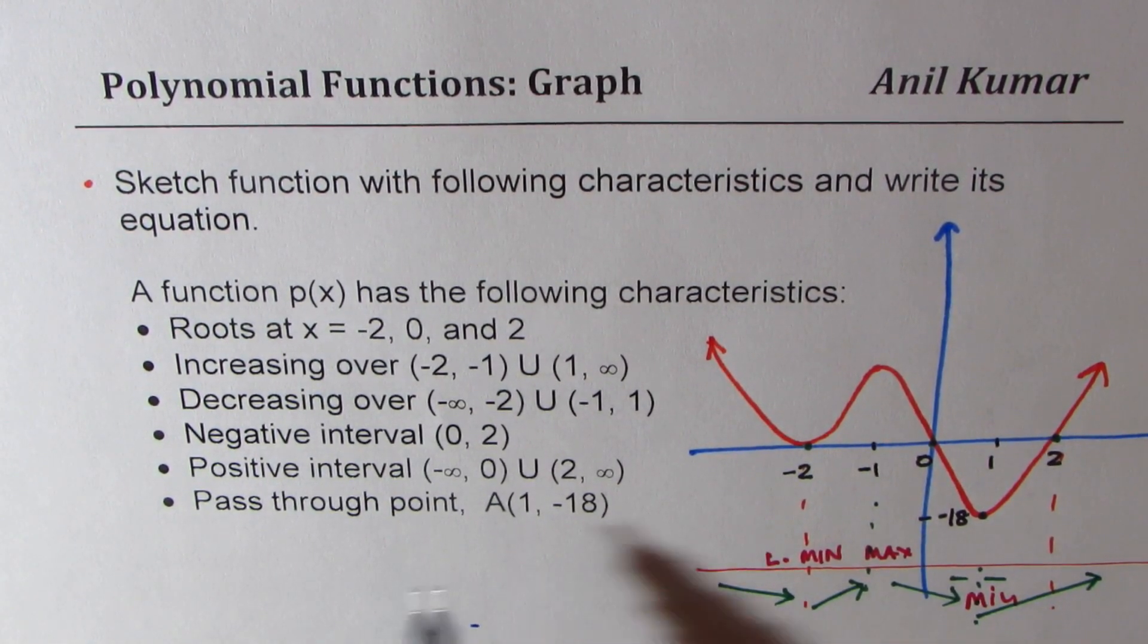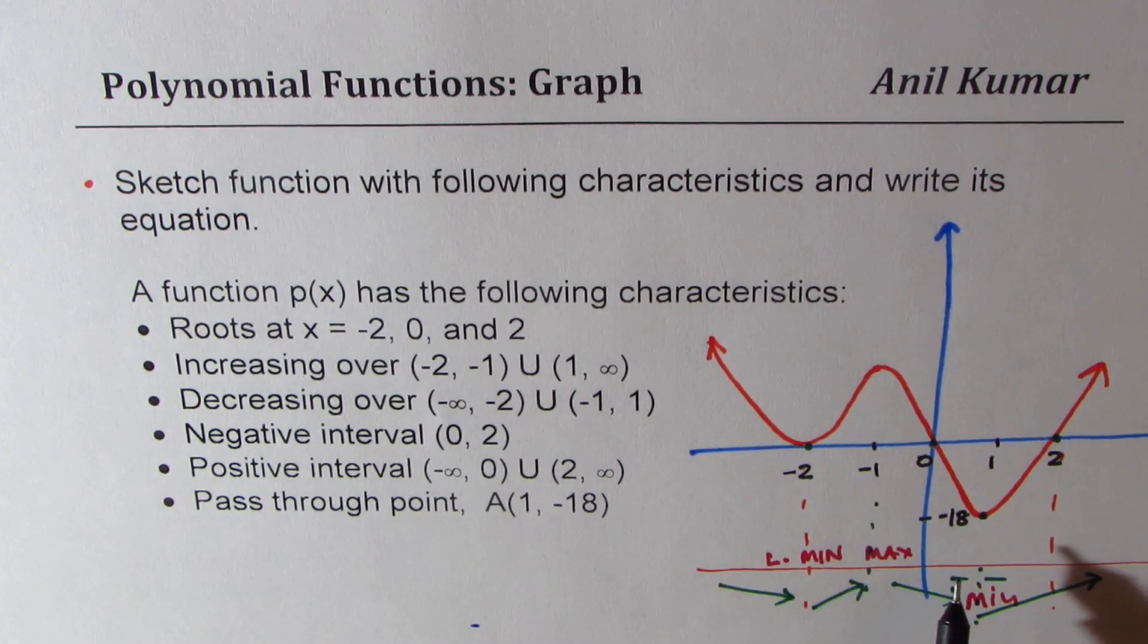So this smooth curve will represent a polynomial where this point should be labeled as minus 18. If you check, all the conditions are met.